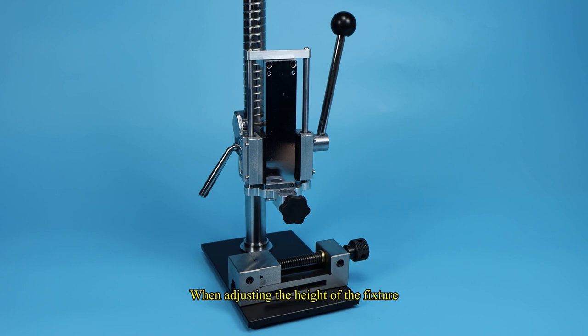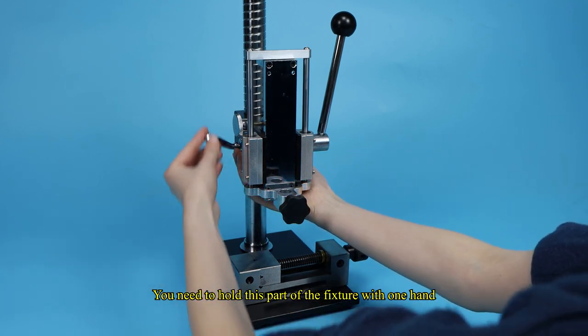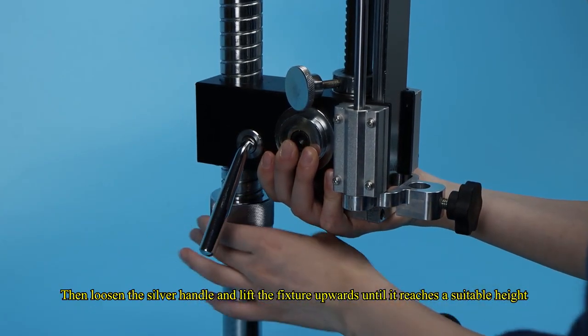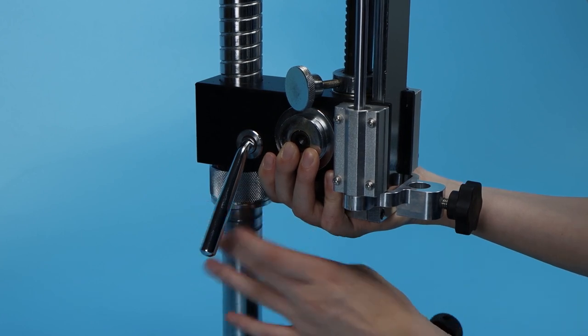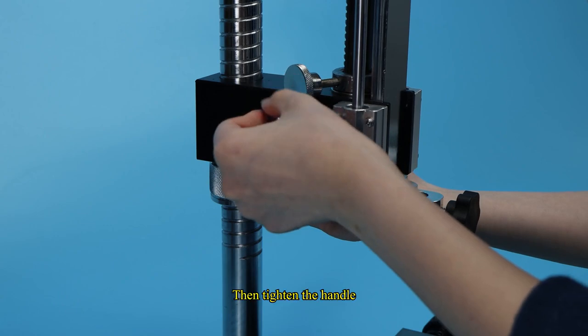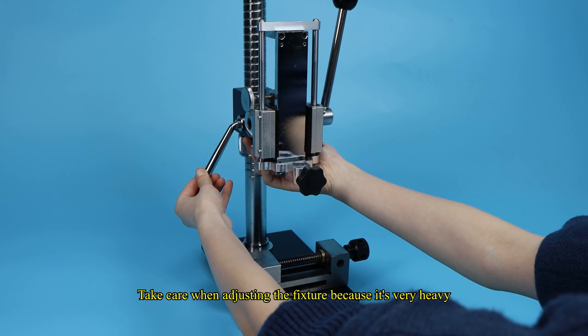When adjusting the height of the fixture, you need to hold this part of the fixture with one hand. Then loosen the silver handle and lift the fixture upwards until it reaches a suitable height. Then tighten the handle. Take care when adjusting the fixture because it's very heavy.